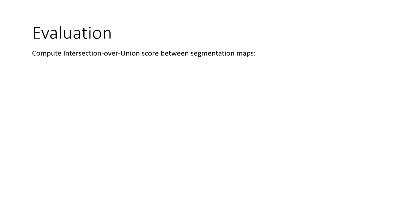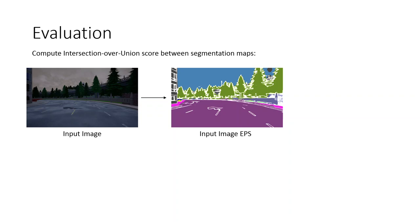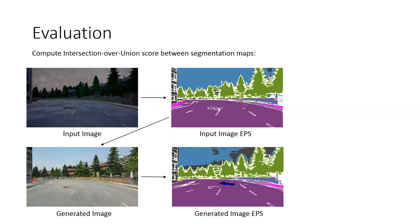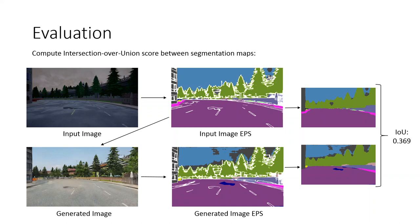The generated images have a realistic look but also sometimes contain artifacts. For a more objective measure, we compute the intersection over union score of the generated images. First, the input image is processed into an EPS map. This EPS map is then turned into a generated image of the same scene. That result is then processed again to create another EPS map. We split the segmentation from the EPS maps and compare them using the established IOU score. The results tell us how well the input image has been recreated. Please note that the segmentation network never saw any images created by our pipeline during its training.